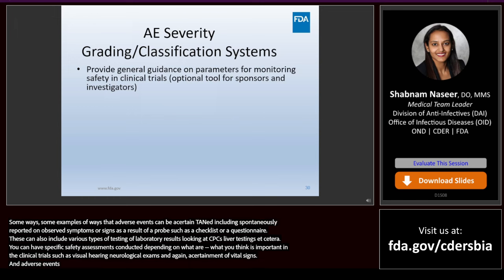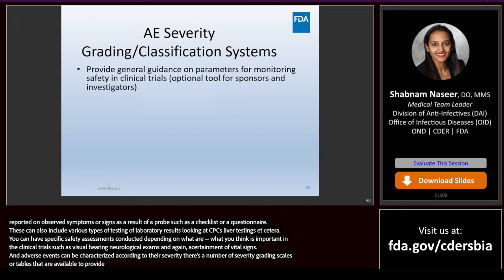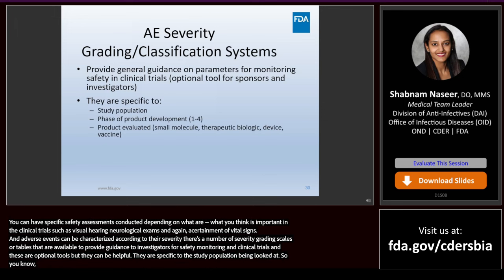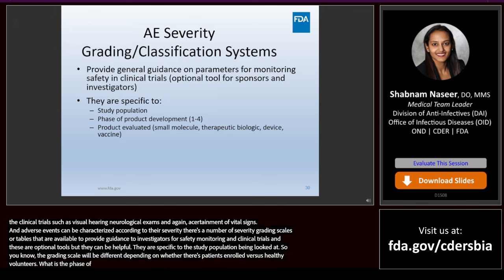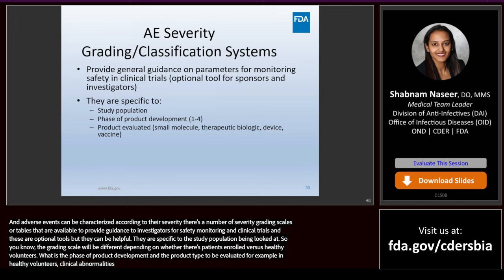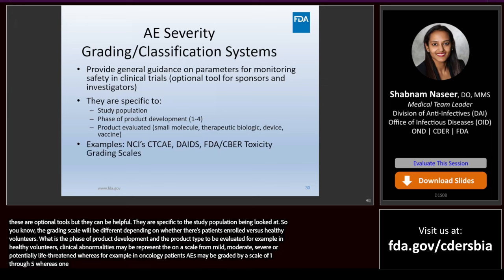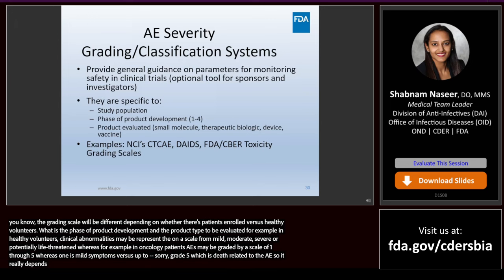Adverse events can be characterized according to their severity. There are a number of severity grading scales available to provide guidance to investigators for safety monitoring in clinical trials — these are optional tools but can be helpful. They are specific to the study population: the grading scale will differ depending on whether patients or healthy volunteers are enrolled, the phase of product development, and the product type. For example, in healthy volunteers, clinical abnormalities may be represented on a scale from mild, moderate, severe, or potentially life-threatening, whereas in oncology patients, AEs may be graded on a scale of 1 through 5, where 1 is mild symptoms and grade 5 is death related to the AE. It's also important to keep in mind that the term severe is not the same as serious in the classification of AEs.